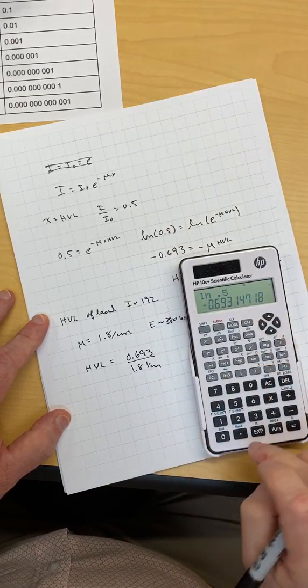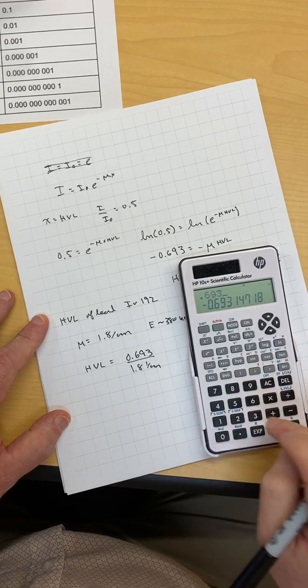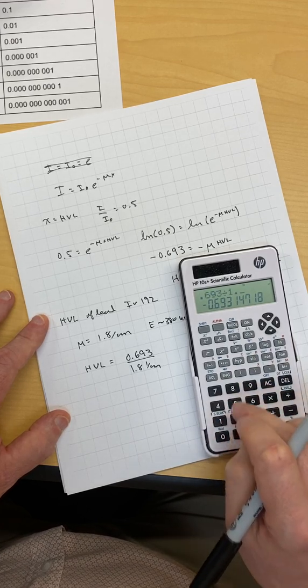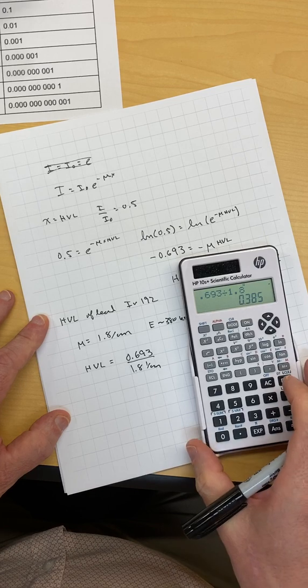Get my calculator out again. 0.693 divided by 1.8 equals 0.385.